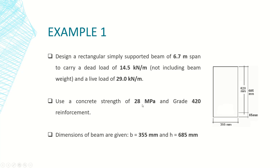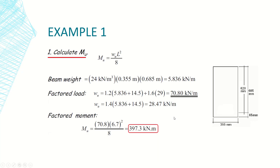We will be using a concrete strength of 28 megapascals and steel grade 420, meaning the yield strength of the steel is 420 MPa. The beam dimensions are: width B = 355 millimeters and total depth H = 685 millimeters. The first step is to determine the design moment — the ultimate moment.